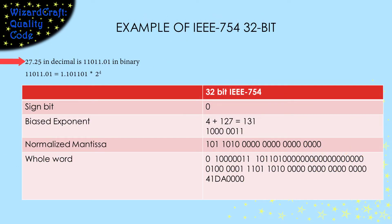Let's look at an example of how 27.25 is stored in IEEE 754 32-bit floating point. 27.25 is 11001.01 in binary. We shift the decimal point to the left four positions so that only a single one is left to the left of it. That gives us an exponent of 4.